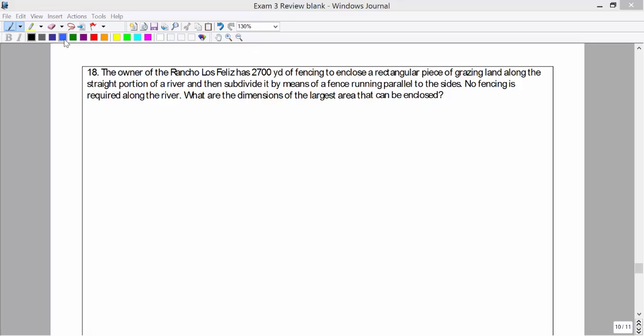Alright, we have for number 18 that the owner of a ranch has 2,700 yards of fencing. So let's put this in a little box here. The problem is to enclose a rectangular piece of grazing land along the straight portion of a river, and it's going to be subdivided by means of a fence running parallel to the sides. No fencing is required along the river. We want to know what are the dimensions of the largest area that can be enclosed.